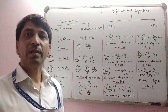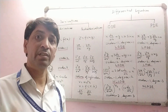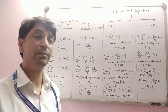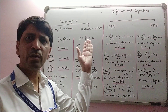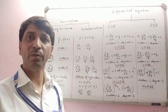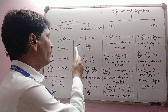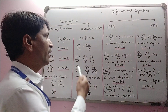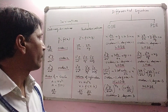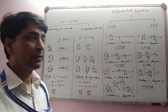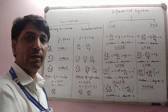Suppose z is a function of two independent variables x and y — or maybe more than two independent variables. Then we find partial derivatives: ∂z/∂x and ∂z/∂y. These are partial derivatives of order 1.